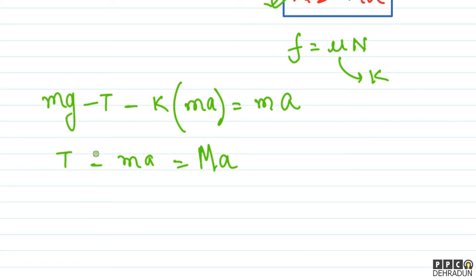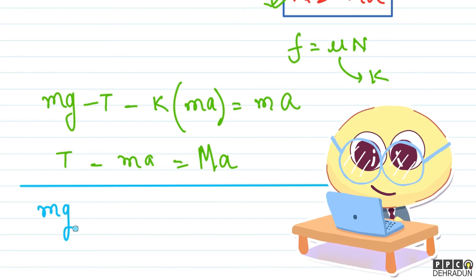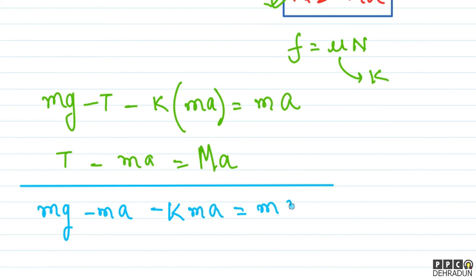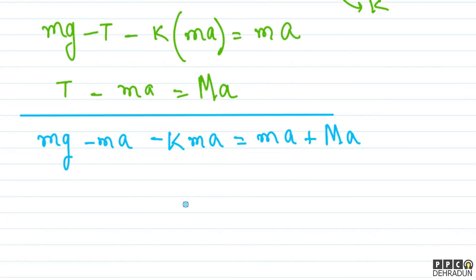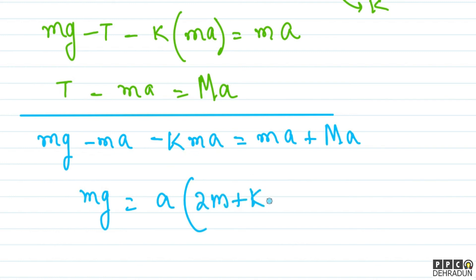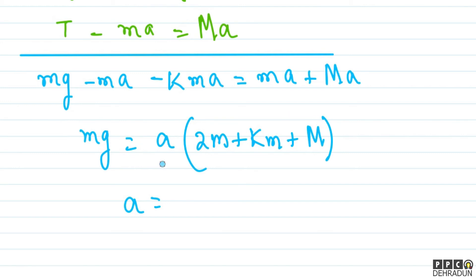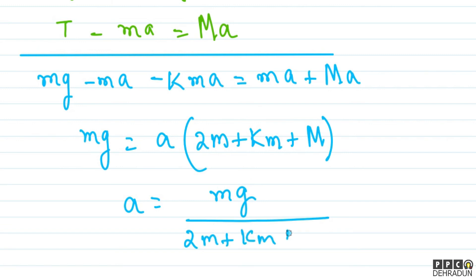Bachon, humara tension dono equations mein aa gaya hai. In dono equations ko simply add kar denge to tension cancel ho jayega. Toh hum likh sakte hain: mg minus m·a minus k times m·a equals m·a plus capital M·a. Yahan se hum paayenge: mg equals a times (m + m + km + M), simplifying to: a equals mg divided by (2m + km + M).